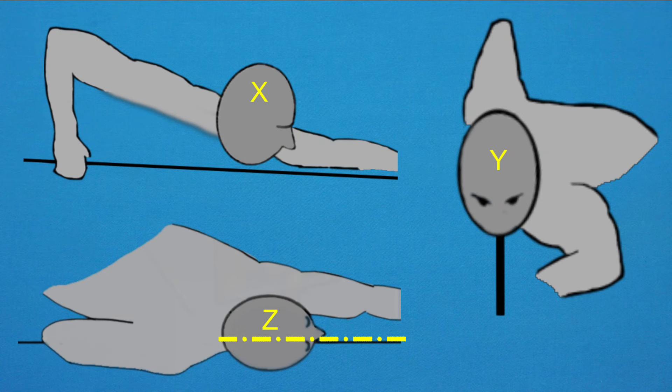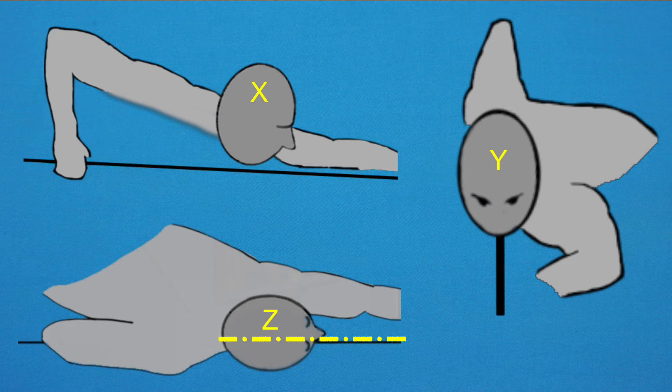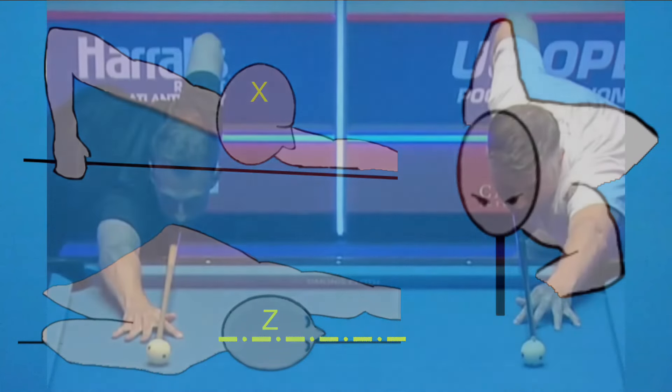Z-axis head rotation, however, is another matter. I have personally found it very difficult to get my head rotated straight down the shot line, and there are tons of expert players who don't. Let's take a look at this photo for an example.